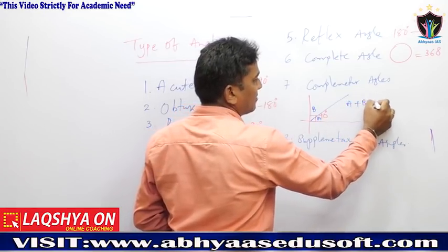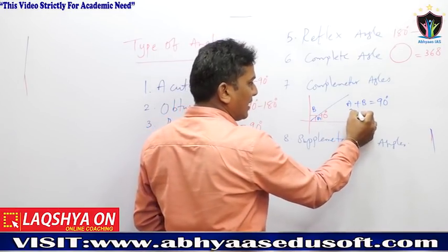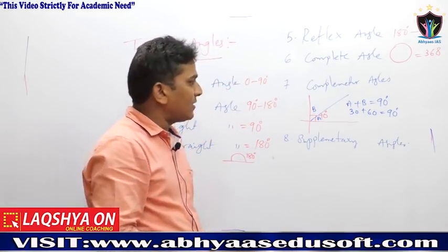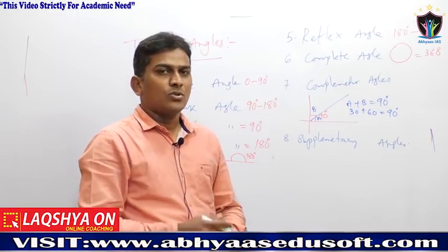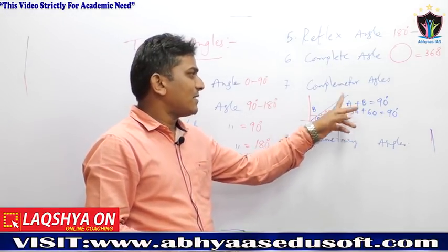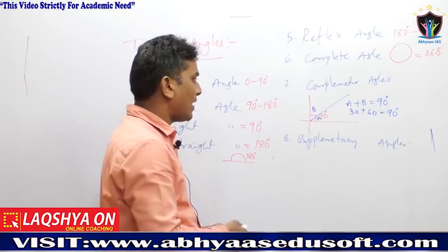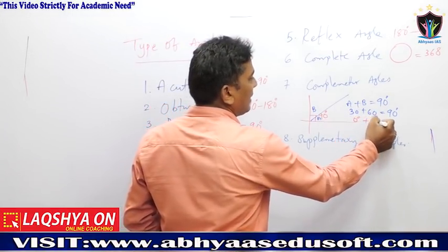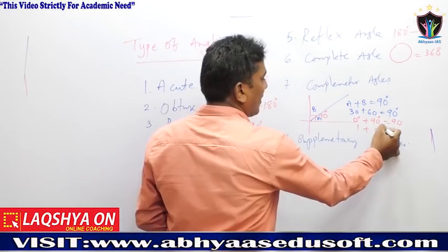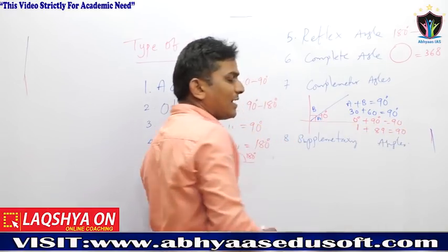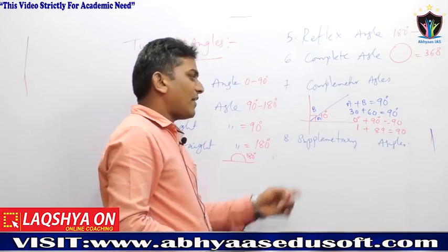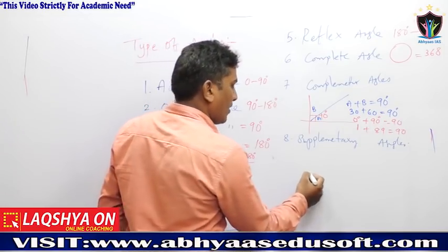If angle A is 30, then angle B will be 60, making the total 90. So 30 degrees is complementary to 60 degrees, and 60 degrees is complementary to 30 degrees. The sum of two complementary angles is 90 degrees. For example, 0 complementary is 90, 1 degree complementary is 89 degrees.